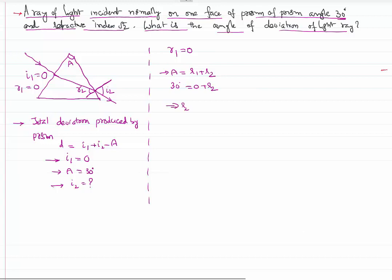Sin 30 is one-half, so i2 is 45 degrees. So the angle of deviation is 45 degrees. This is how I can solve the problem. Thank you for watching, keep coming back for more video lessons.